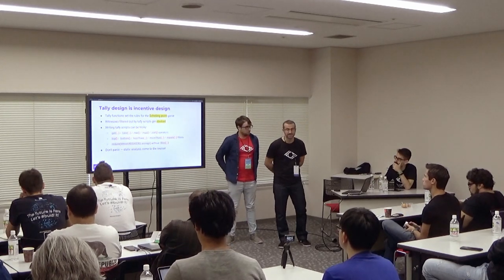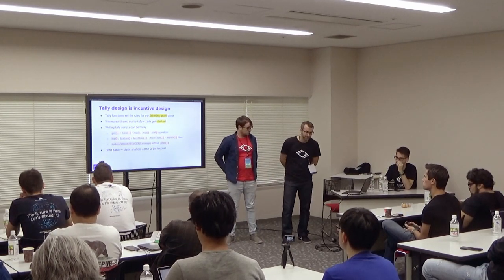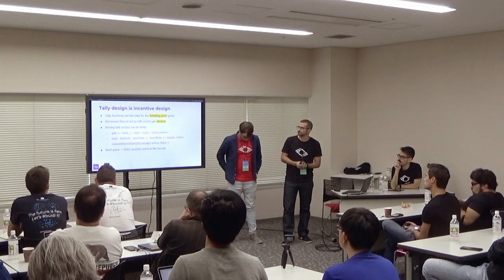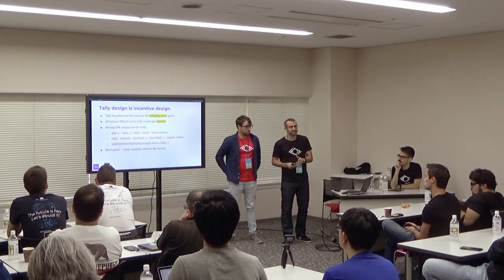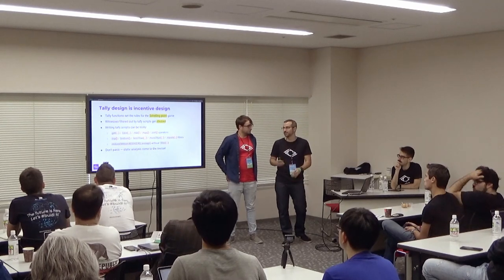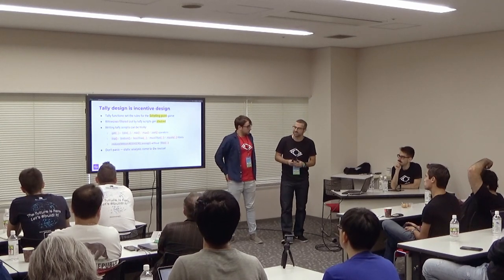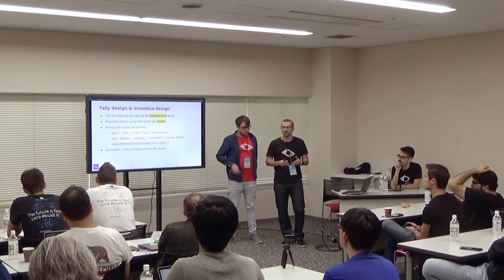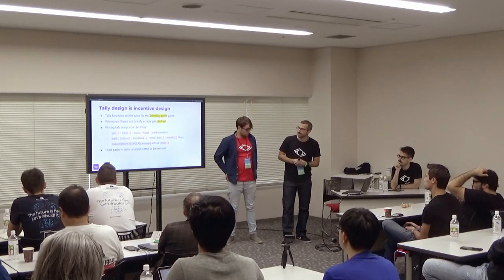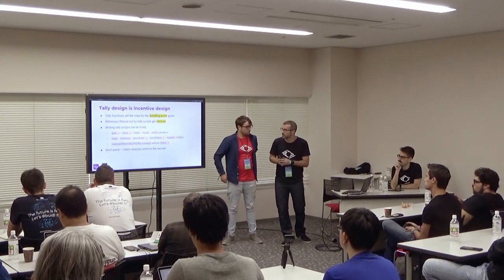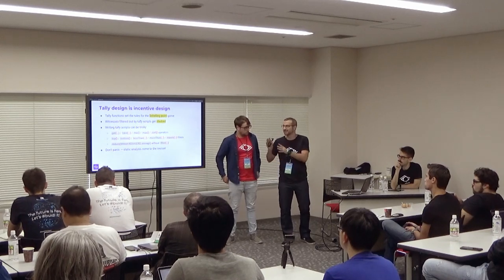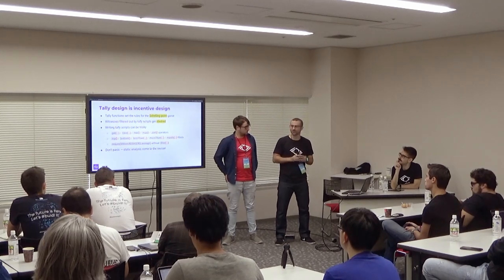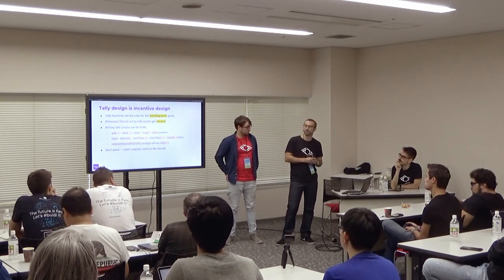Writing tally scripts means writing incentive design. These tally scripts set the rules of a sharing game. Normally, if nodes are not coordinated, they will behave naturally, and to maximize profit they will act honestly — the best strategy is to follow the script, which converges to a single focal point. Those that are filtered out in this last stage get slashed. This is really important and critical because writing tally scripts can be tricky. If you use a 'get first' operator, some witnessing nodes will have more power to influence the result. A 'filter-not' approach could allow a malicious node to push the biggest number and influence the result. Similarly, a reduce-average without a filter lets someone push a super-large number to skew the outcome. But this is easy to identify with static analysis — we are already working on putting this into the compilers.